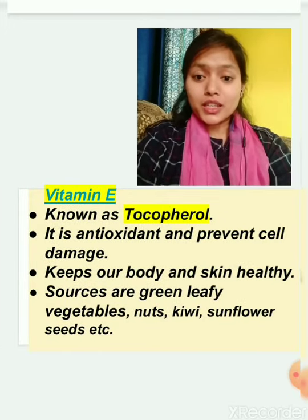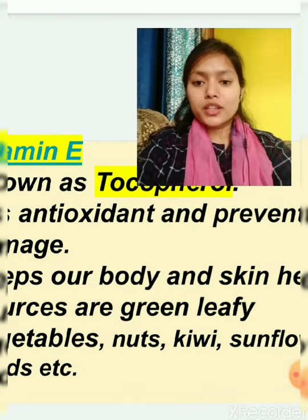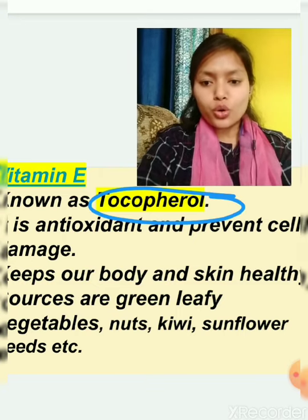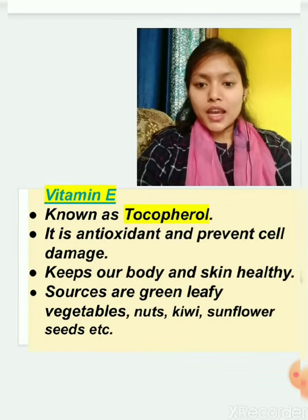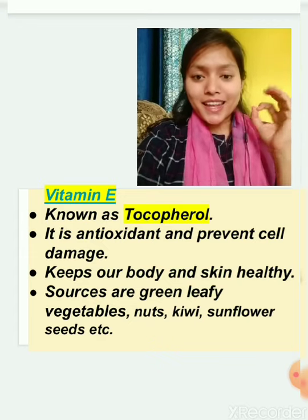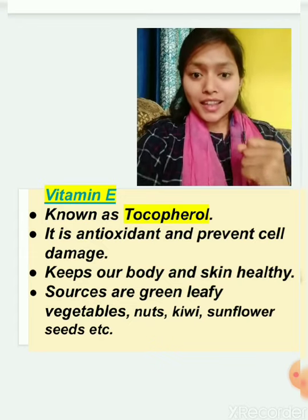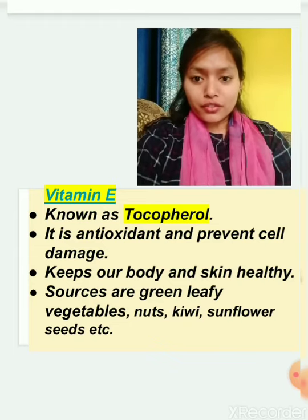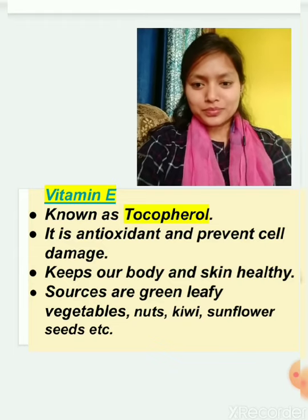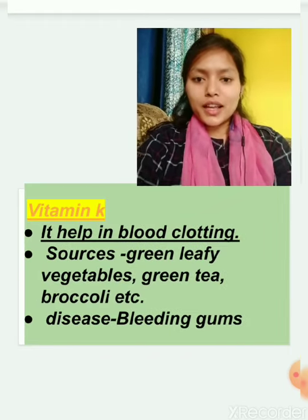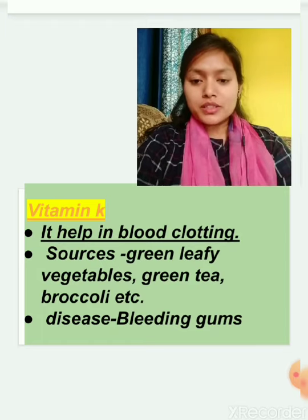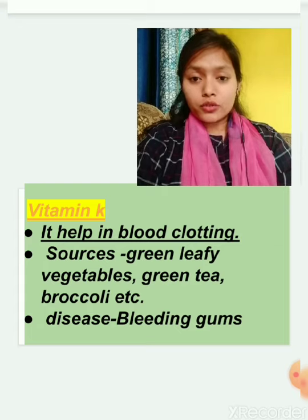Vitamin E is also known as tocopherol. It is an antioxidant and prevents cell damage inside our body. It keeps our bones and skin healthy. Sources of vitamin E include all green leafy vegetables, nuts, kiwis, and sunflower seeds. Vitamin K helps in blood clotting. Its sources are green leafy vegetables, green tea, and broccoli.